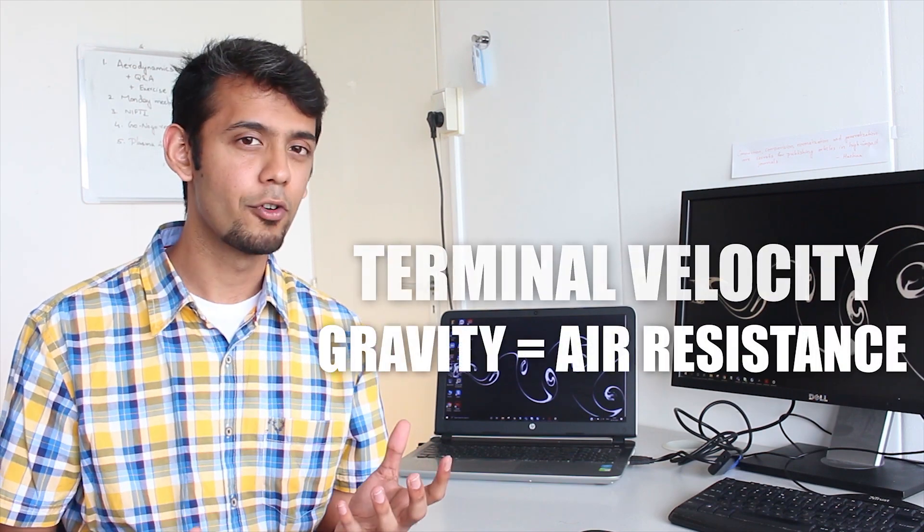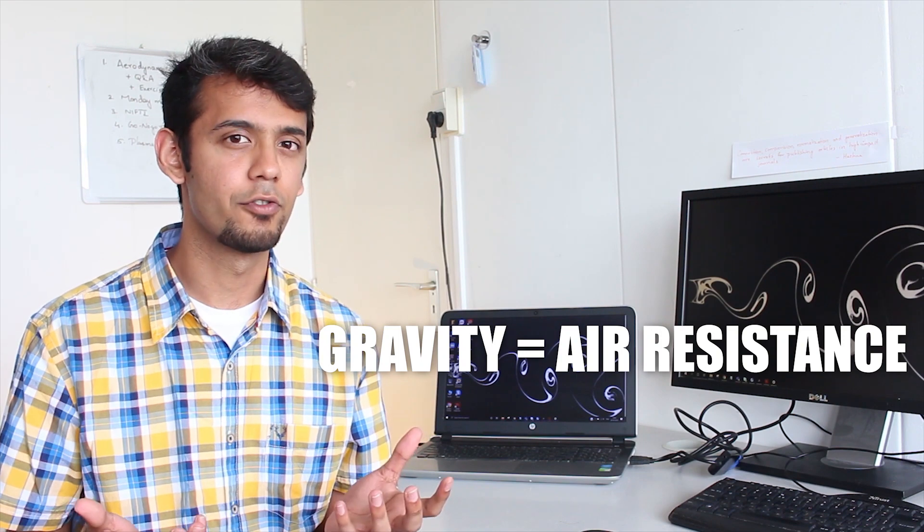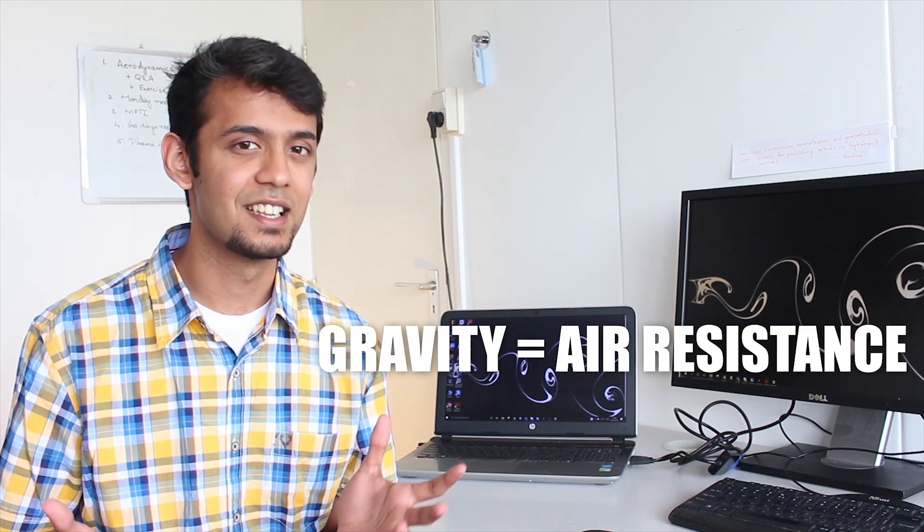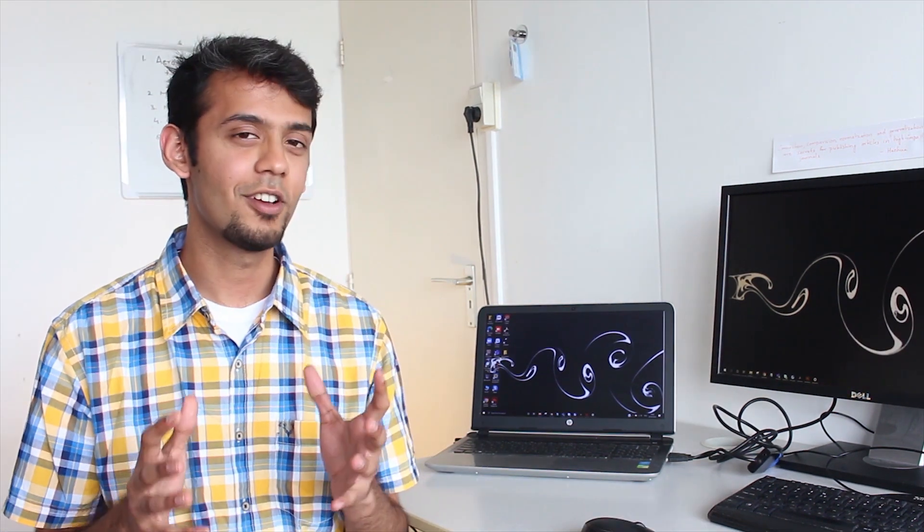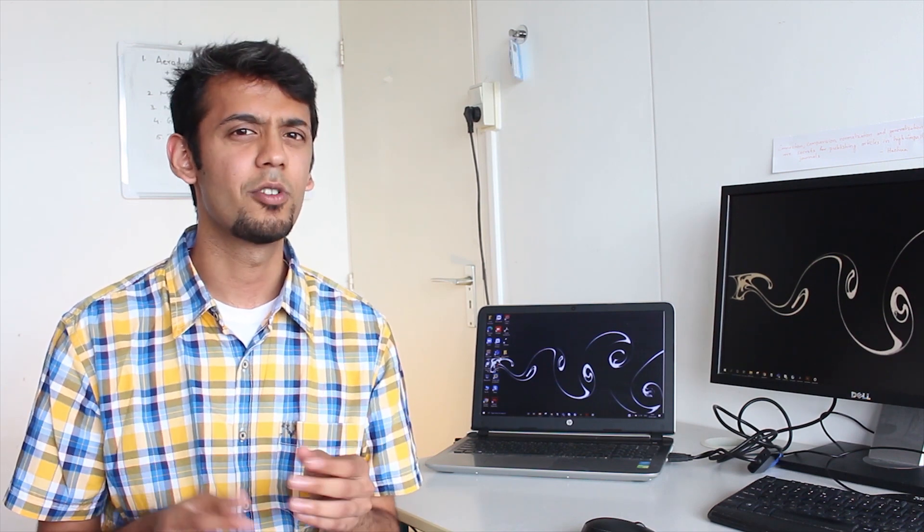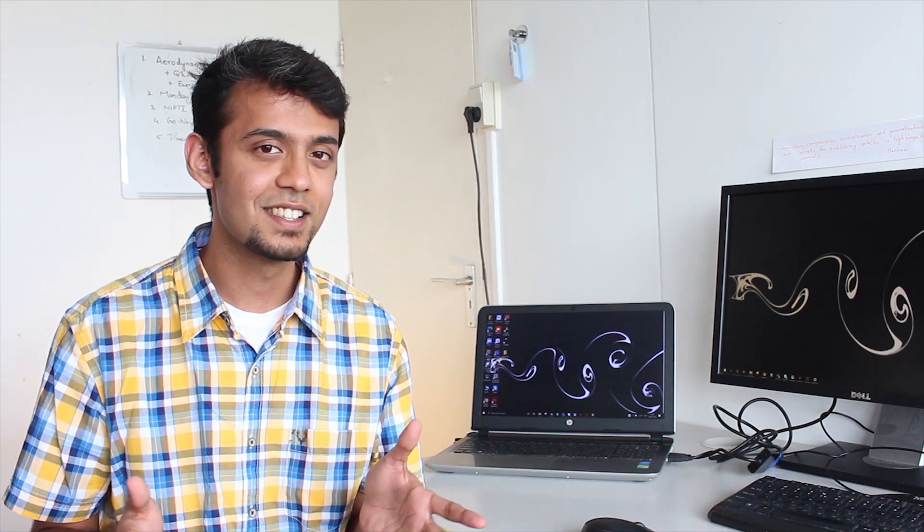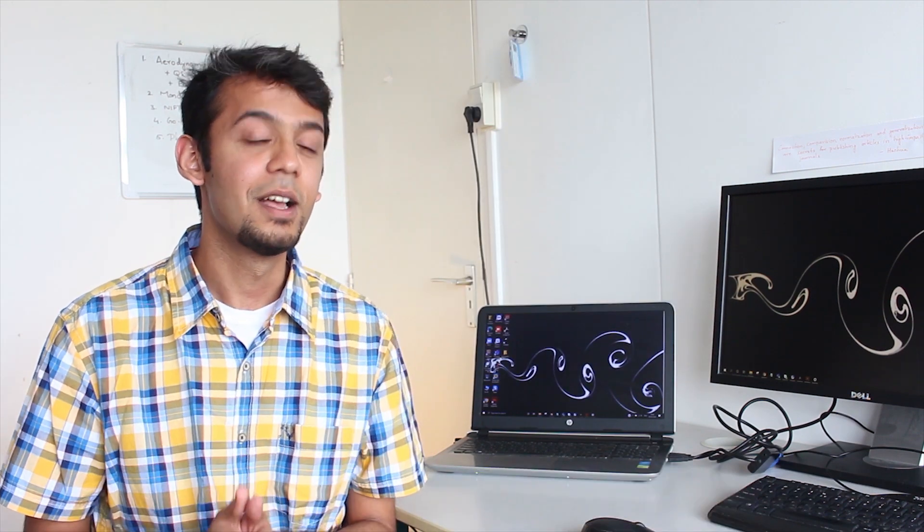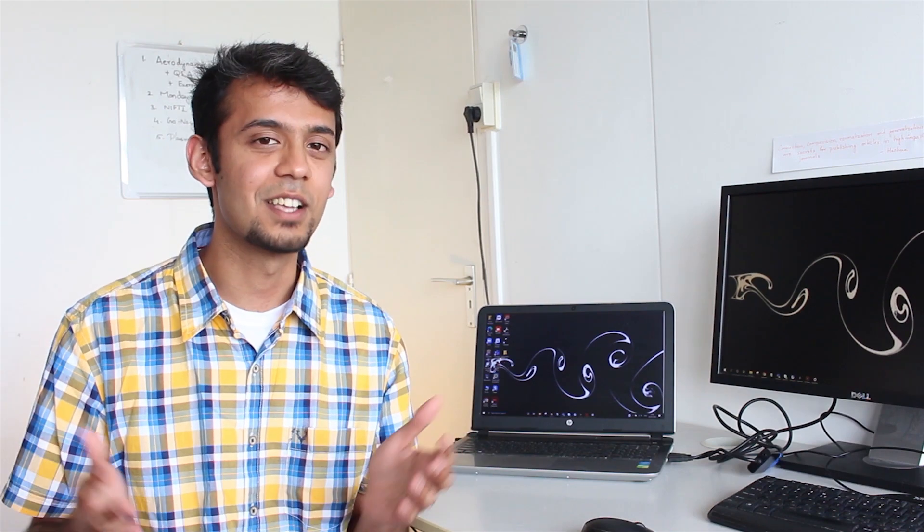Meaning, the drag force balances out the gravitational force and the drop stops accelerating. The terminal velocity of a drop of radius 0.01 mm is about 0.012 m per second. What this means is a cloud at an altitude of 5 km takes about 5 days to fall down to the ground. This coupled with the natural updraft makes sure that the cloud stays up in the sky.